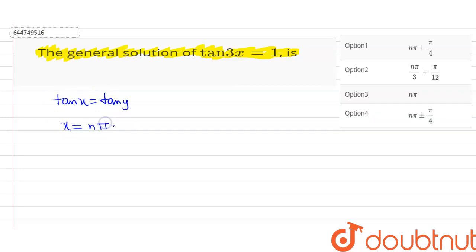Now we've been asked about the general solution of tan(3x) = 1. We know that tan(π/4) = 1, so we can write tan(π/4) in place of 1. Now matching this with the general equation, 3x = nπ + π/4.